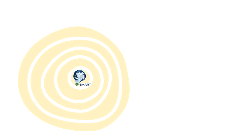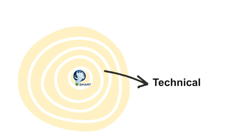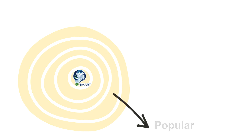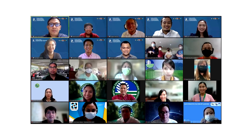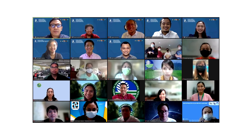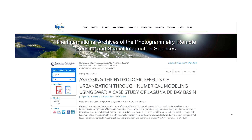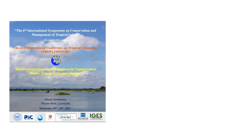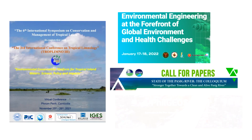Project eSMART adopted a science communication framework in sharing its research findings to a wide range of audiences. We presented our research work to the scientific community through online conferences and journal publications. The team published two papers and participated in five conferences for a total of 21 presentations.